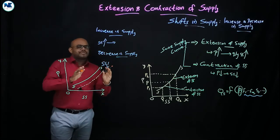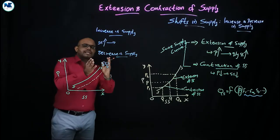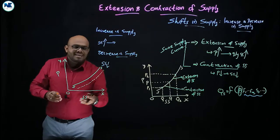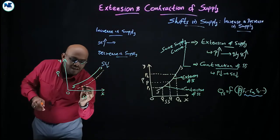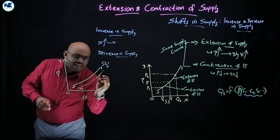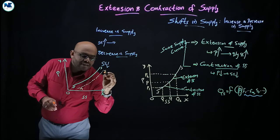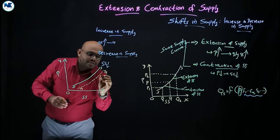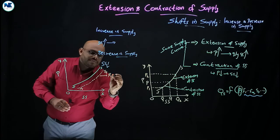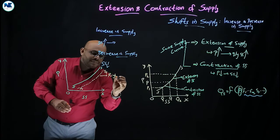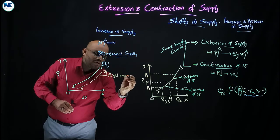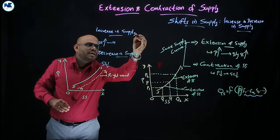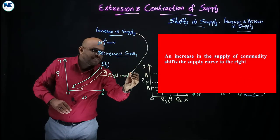Extension and contraction of supply happen on the same supply curve, but here we can see a shift. The new curve is S1. There is a rightward shift of the supply curve, and this rightward shift represents increase in supply.